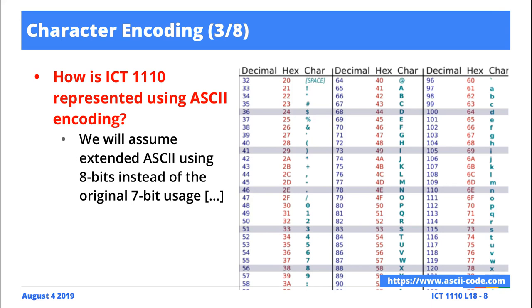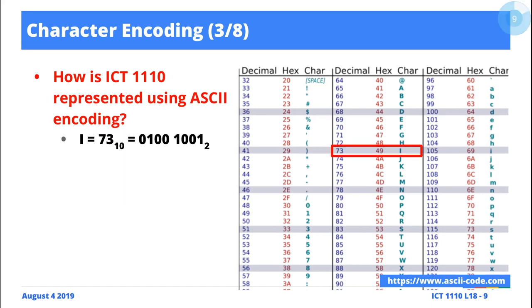Using the ASCII table, we gain access to our table and we know that ICT consists of three uppercase alphabetical letters: I, C, and T. We have the symbol '1' represented three times, the symbol '0' represented once, and there's a space between the T and the 1 — so effectively we have eight symbols total. We look up the uppercase letter I in the ASCII table and find it is represented by decimal 73 or hex 49. We then convert decimal 73 into binary using 8-bit representation to get our binary value for I.